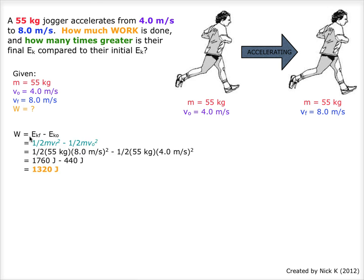To find the amount of work done, we must take the final EK and subtract the initial EK from it. This will give us 1 half times mass times final velocity squared minus 1 half times mass times initial velocity squared.